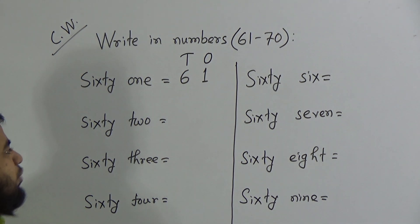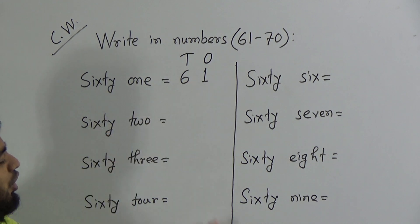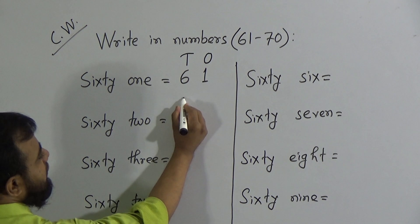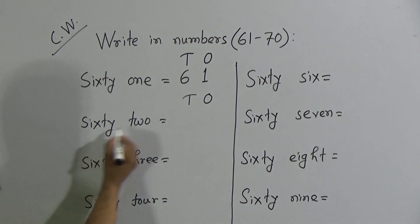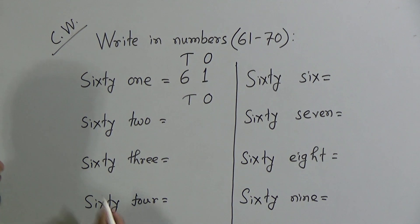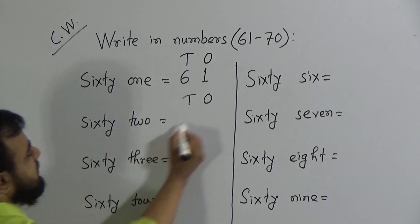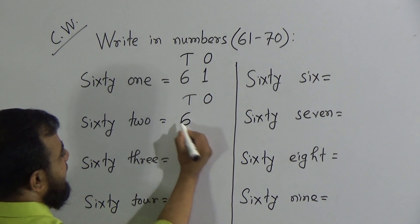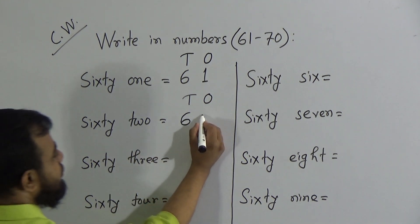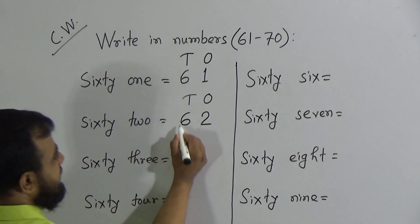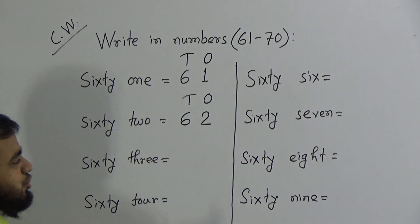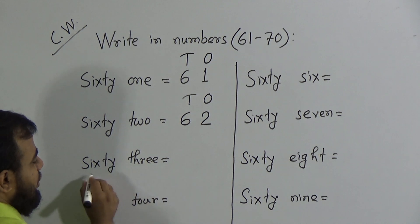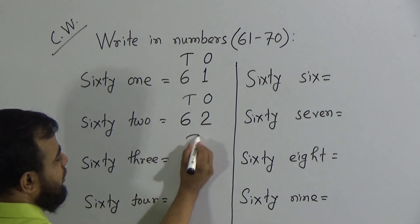Like this, we write all the numbers — first indicate the place value, tens and ones. To write down 62: to write 60, we write 6 in the tens place, and to write 2, we write 2 in the ones place. So six tens and two ones makes the number 62, or we can say six and two makes the number 62.